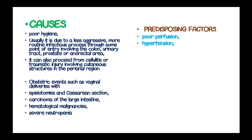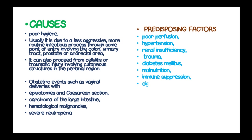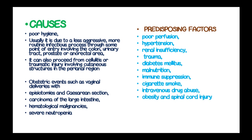The predisposing factors for development of Fournier's gangrene include poor perfusion, hypertension, renal insufficiency, trauma, diabetes mellitus, malnutrition, immune suppression, cigarette smoking, intravenous drug abuse, obesity, and spinal cord injury.